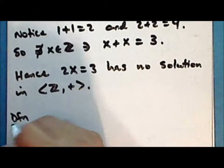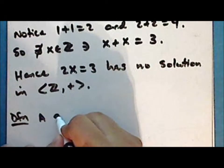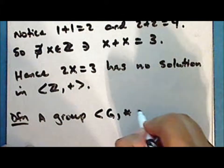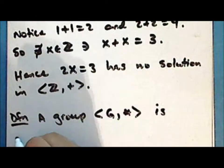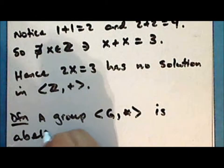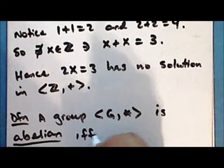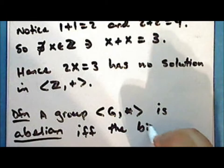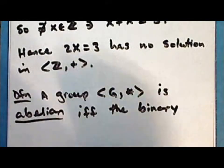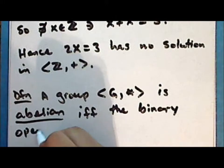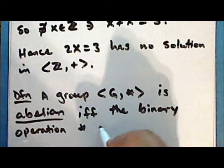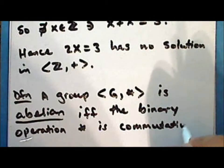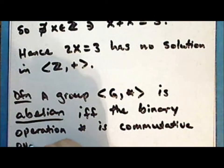New definition: a group consisting of an underlying set G together with the binary operation star is Abelian if and only if the binary operation star is commutative over the set G. That is, for two elements in the set G, we have that a ★ b is the same as b ★ a.